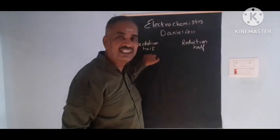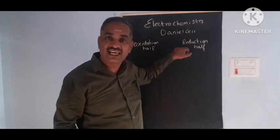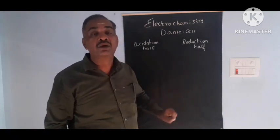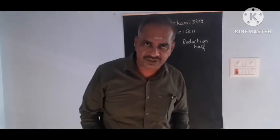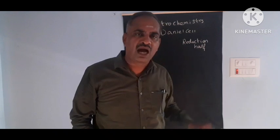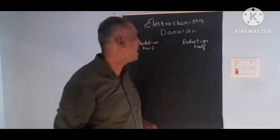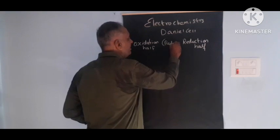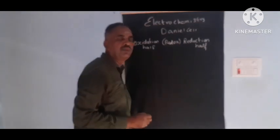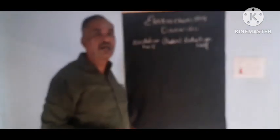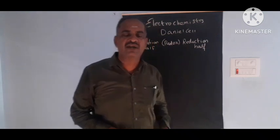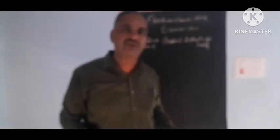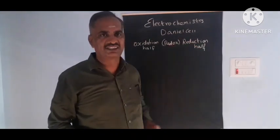Both oxidation as well as reduction reaction occurs simultaneously in a Daniel's cell — the oxidation half and the reduction half. So we call it as a redox reaction, because oxidation and reduction occur simultaneously.